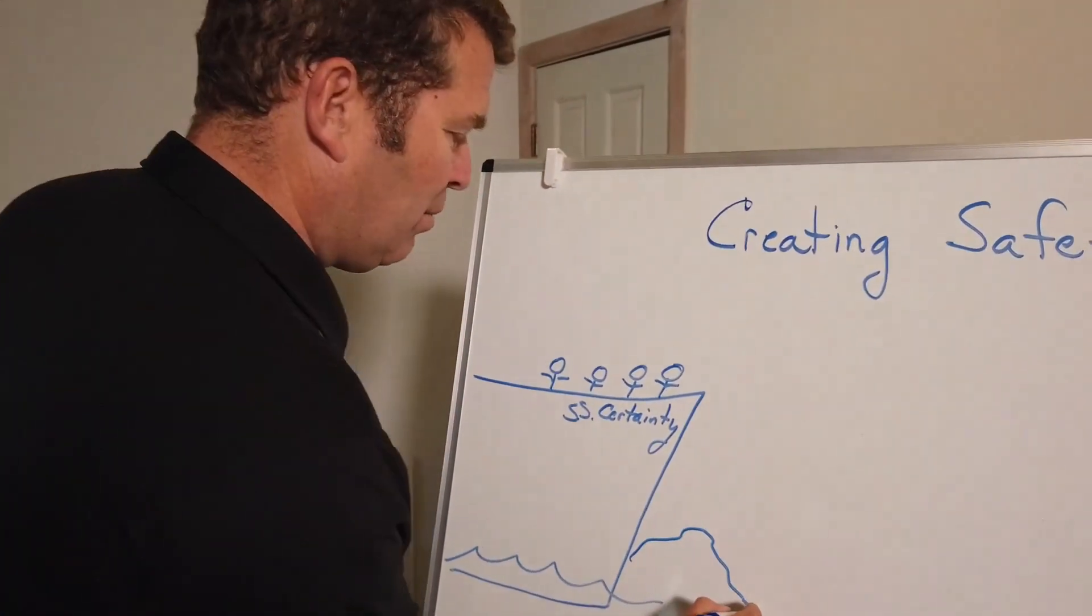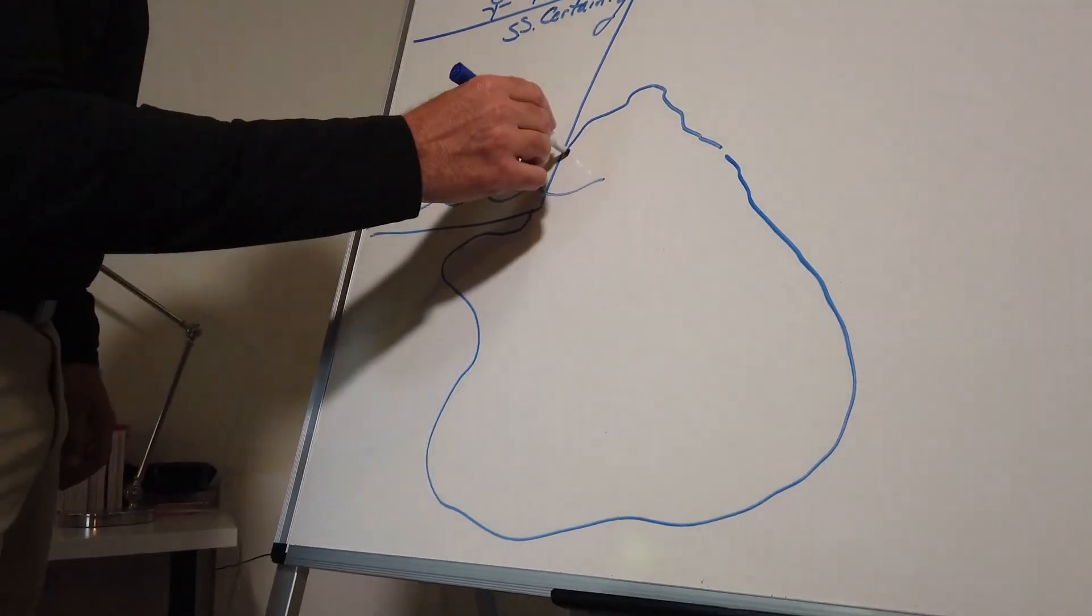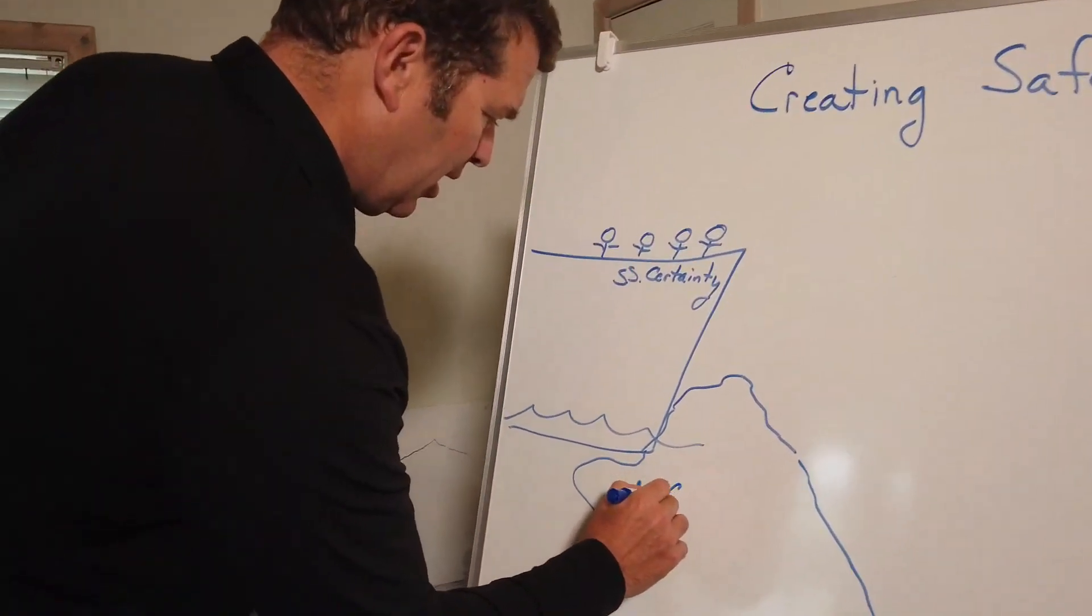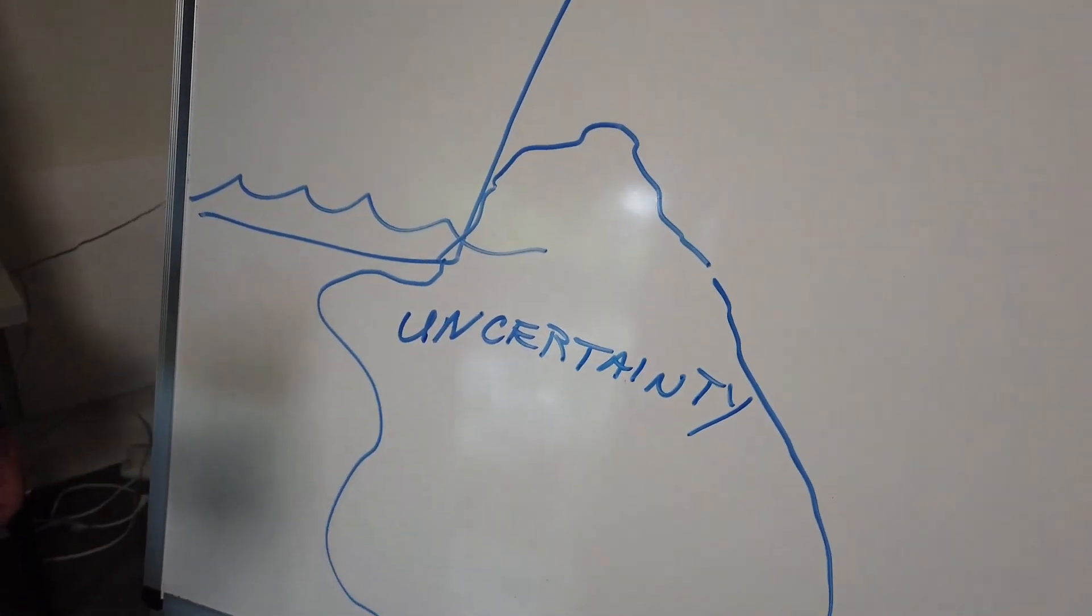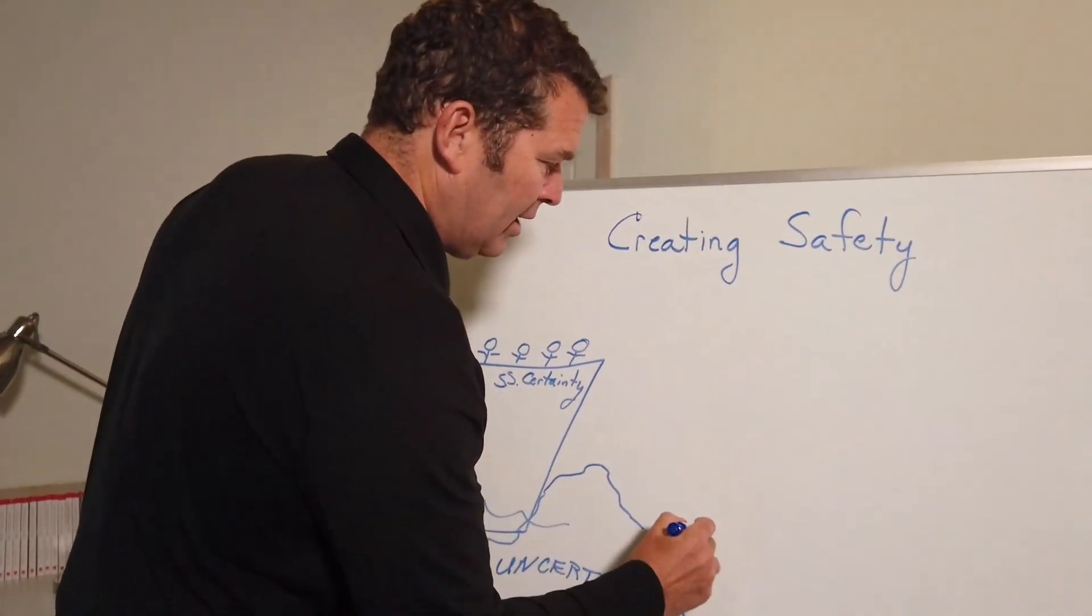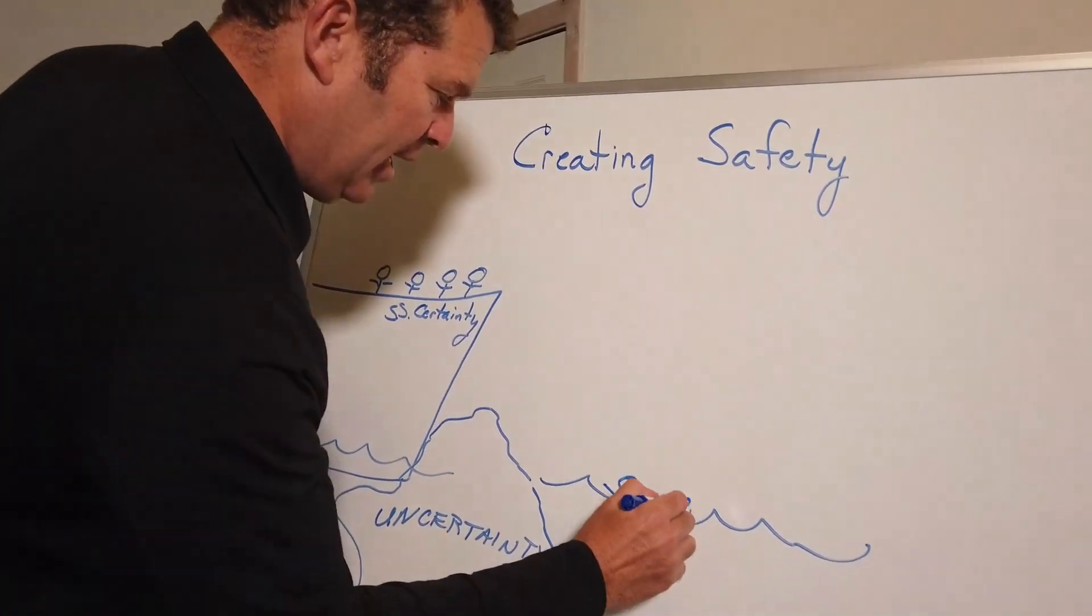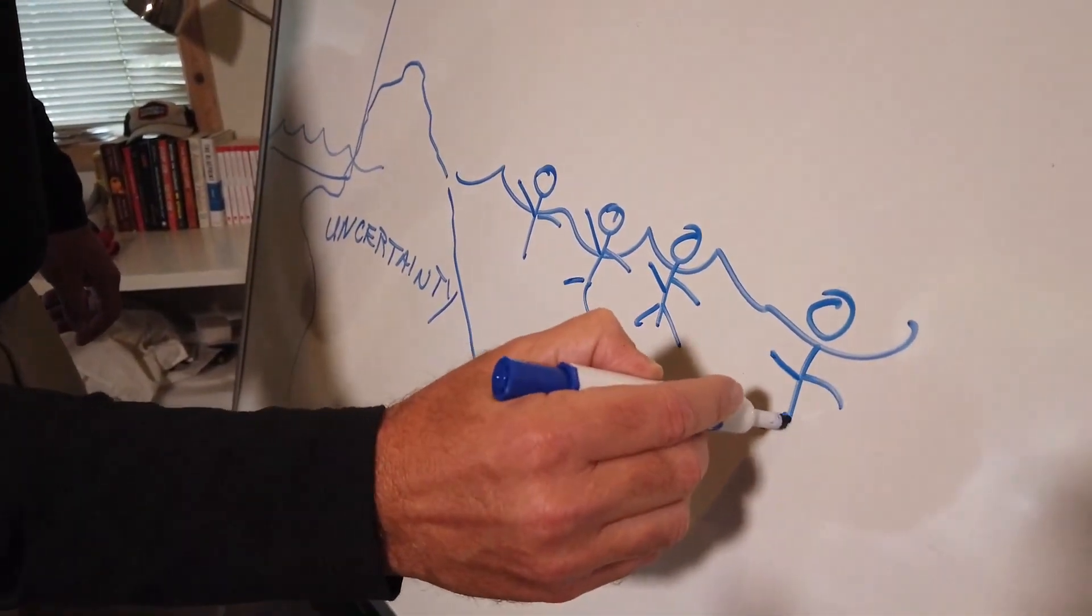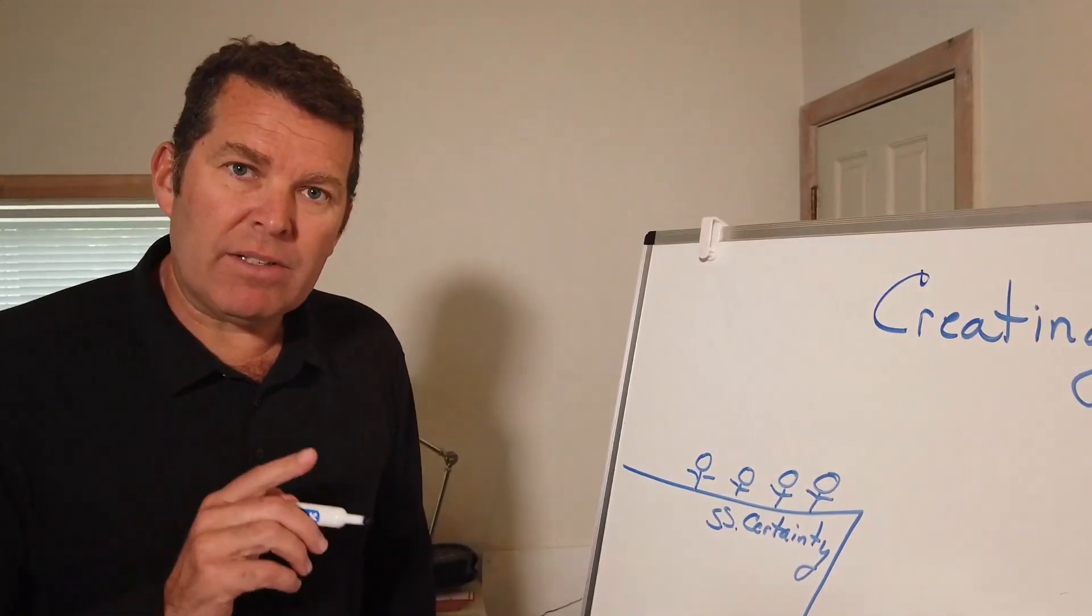Out of nowhere this seemingly small obstacle called an iceberg which has a huge bottom to it sinks our SS Certainty and our iceberg is uncertainty. What ends up happening is a very disruptive break in our routine. People end up jumping off into the water because their certainty ship has sunk. Now we've got all these people bobbing in the water. What are they thinking about when they're bobbing in the water? They're thinking about themselves. The water's cold. There are sharks in the water. They're only thinking about self-preservation.